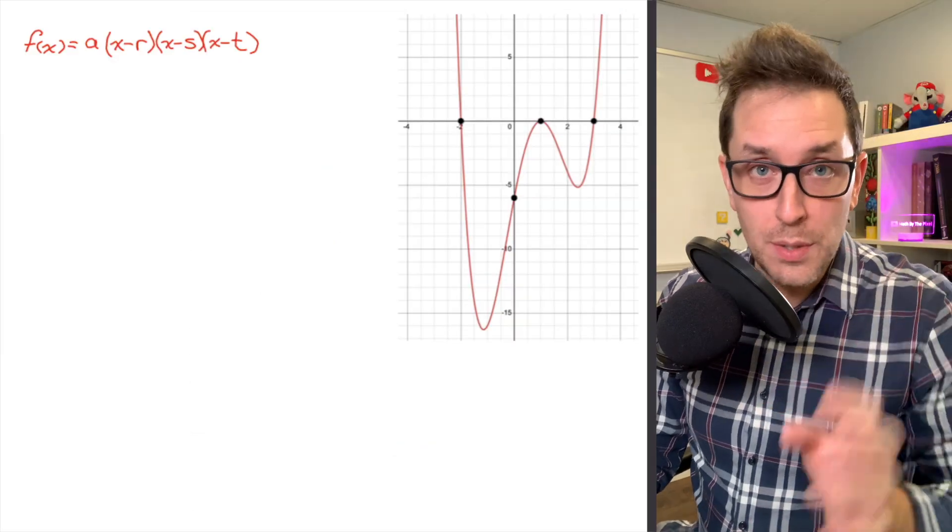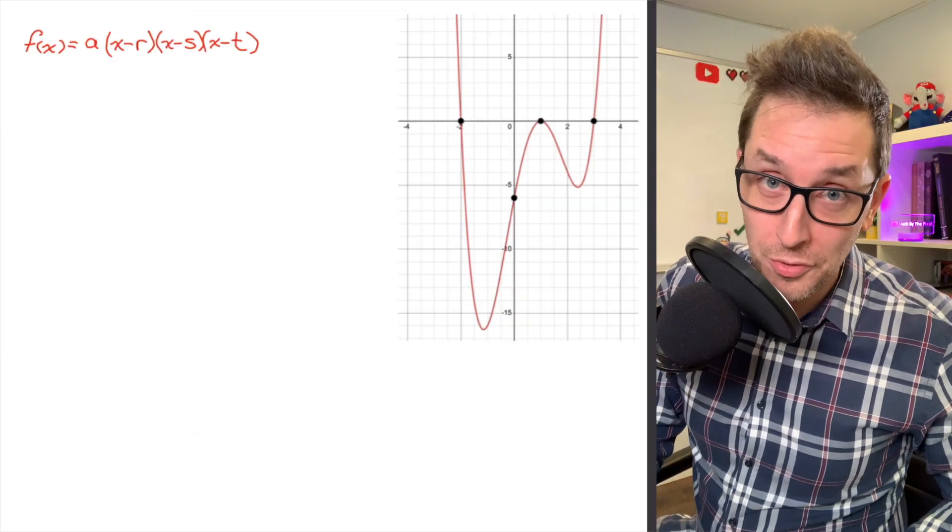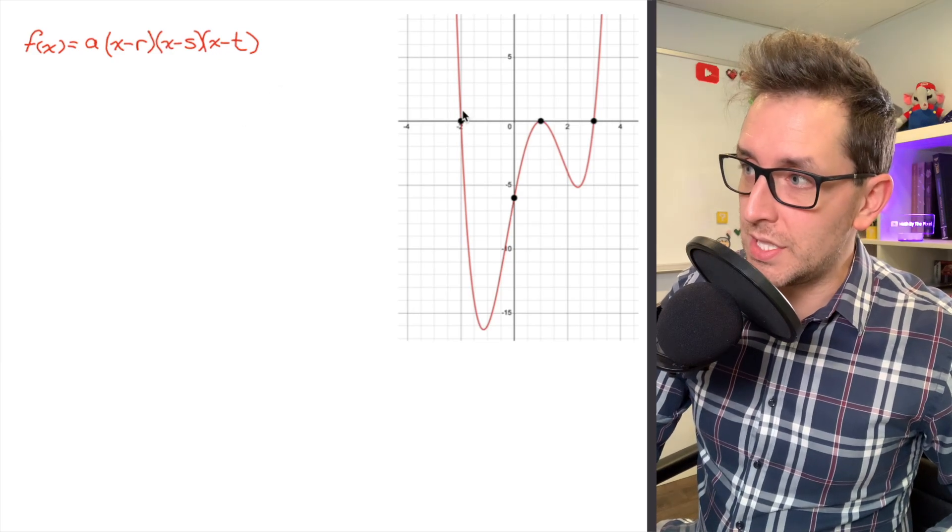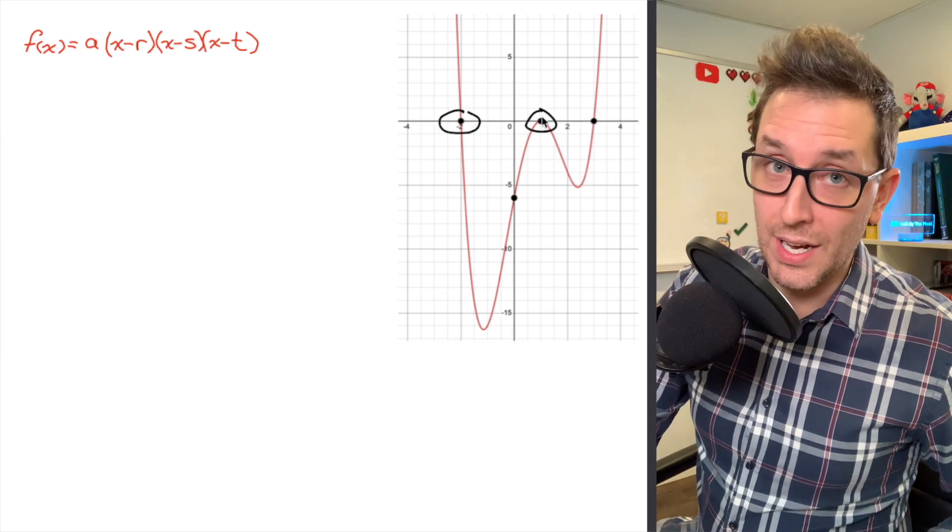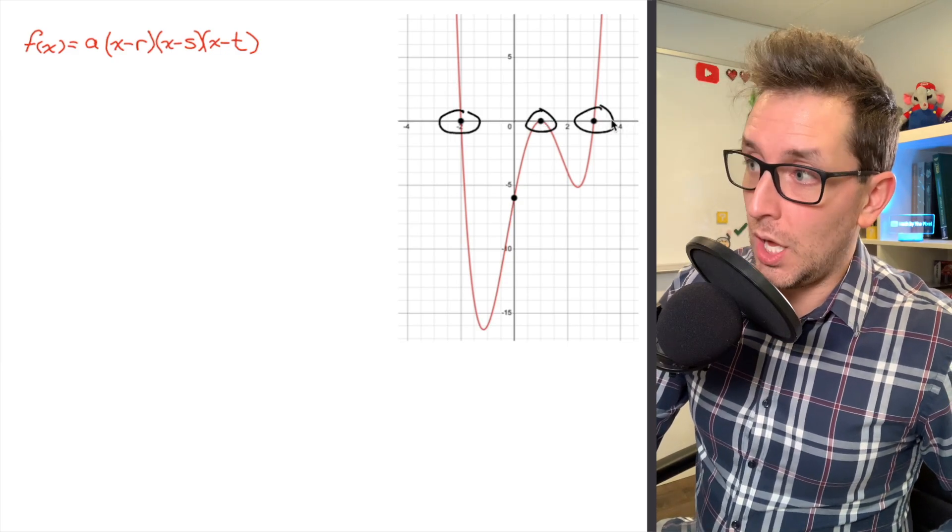Because its graph has a few key pieces of information that are going to be very helpful for us, and that is the x-intercepts. As you can see on the graph here, I have an x-intercept located at negative 2, I've got an x-intercept located at 1, and I've also got an x-intercept located at 3.